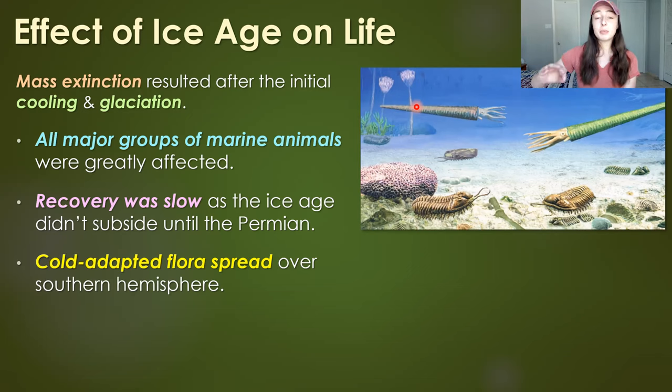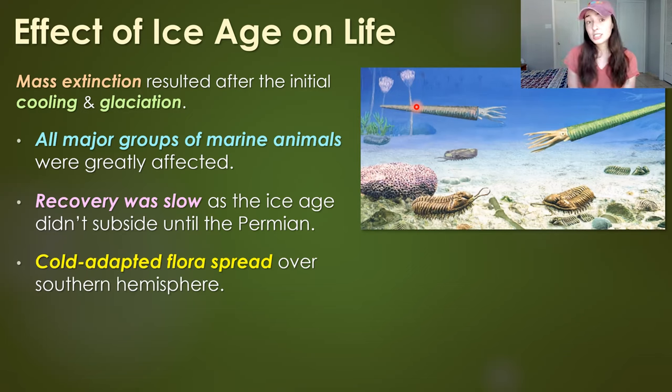In the ocean, life was well established — trilobites, ammonoids, nautiloids, corals, sponges, and crinoids were all dominant in the Paleozoic seas. After the extinctions, recovery was really slow because the ice age lasted for nearly another 15 million years and the extinctions occurred right at the beginning, so recovery was very hard for species that had gone extinct due to the cooling.